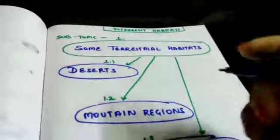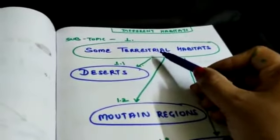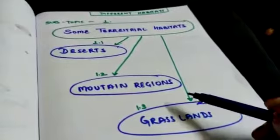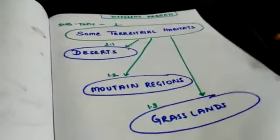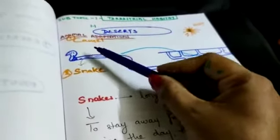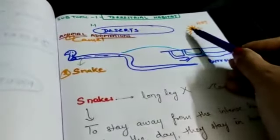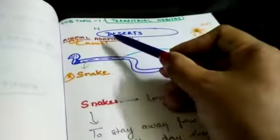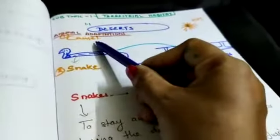Here is our first subtopic, some terrestrial habitats. Terrestrial habitats means those organisms that live on land. Three habitats are described in your book: deserts, mountain, and grassland. All these three come under terrestrial habitats. So here, desert. The temperature of the habitat during daytime is very hot and at nighttime very cold.